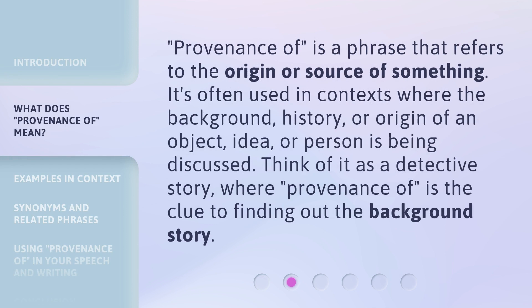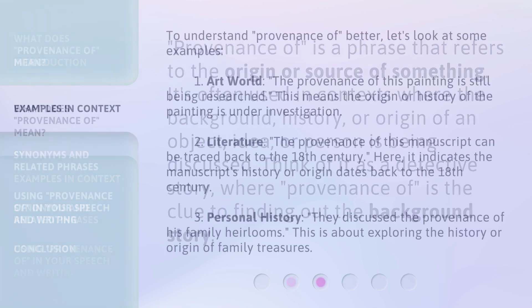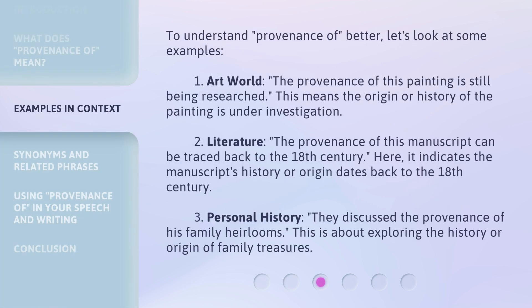...refers to the origin or source of something. It's often used in contexts where the background, history, or origin of an object, idea, or person is being discussed. Think of it as a detective story where 'provenance of' is the clue to finding out the background story. To understand 'provenance of' better, let's look at some examples.